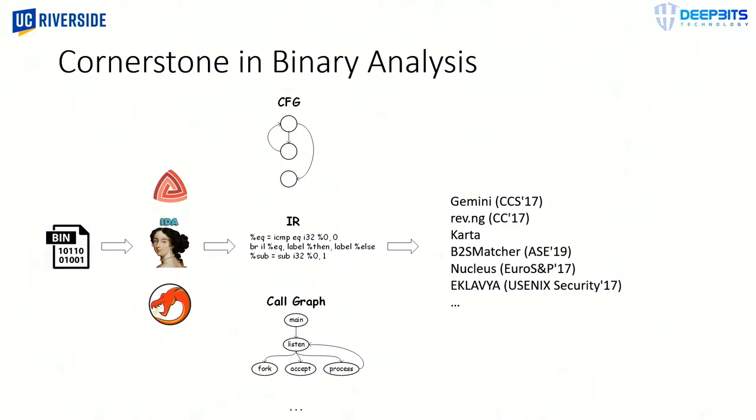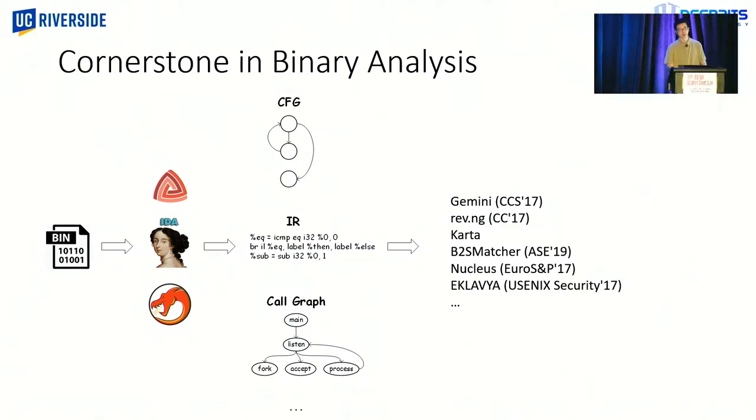Many binary analysis tasks rely on high-level features, and usually people use disassemblers like Capstone or Adapro or Ghidra to extract those features, such as control flow graph or intermediate representation, and use those features in various downstream tasks, as you can see in these papers.